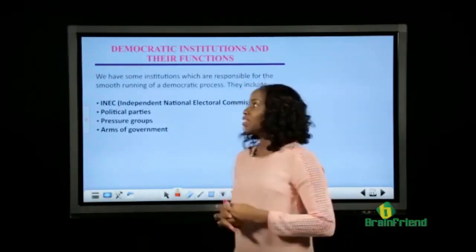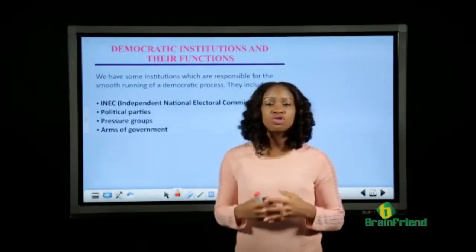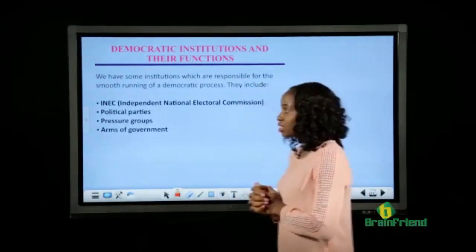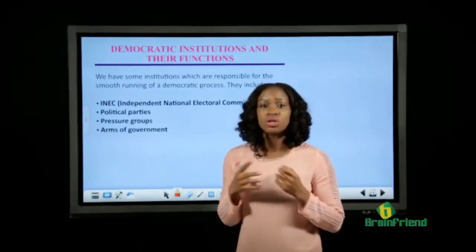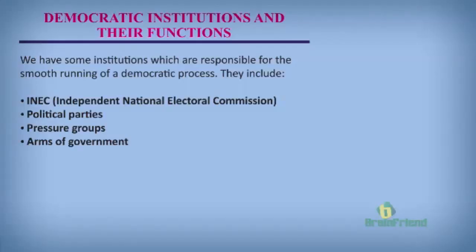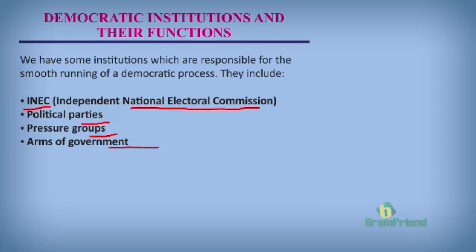Now, we have some institutions that help to ensure the smooth running of a democratic system in a country. Without these institutions, democracy is not real — it is not attainable. One we have is INEC, also known as the Independent National Electoral Commission, which is the body in charge of elections in Nigeria. We also have political parties, pressure groups, and arms of government. These are institutions that ensure the smooth running of democracy in the country.